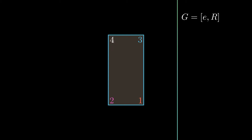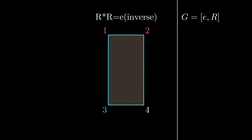Now I'm going to keep rotating the rectangle 180 degrees — what do you think happens? Just pause the video and think about it. It turns out R star R is E: if you rotate 180 degrees and then rotate 180 degrees again, we get the original rectangle, which is E. So we can call R itself the inverse of R, because R star R gives the original element.